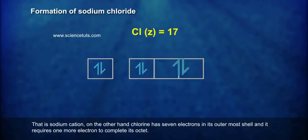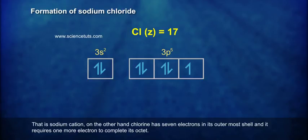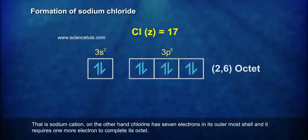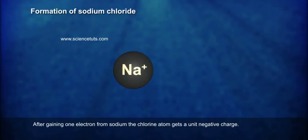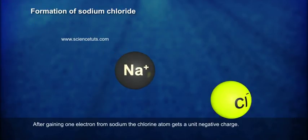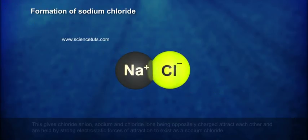On the other hand, chlorine has 7 electrons in its outermost shell and requires one more electron to complete its octet. After gaining one electron from sodium, the chlorine atom gets a unit negative charge.